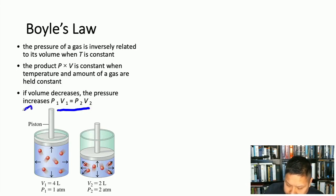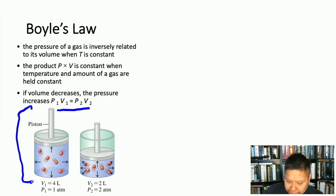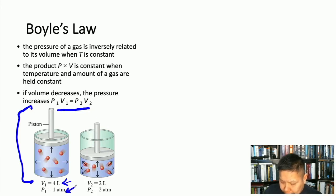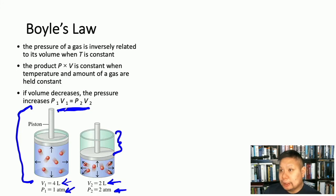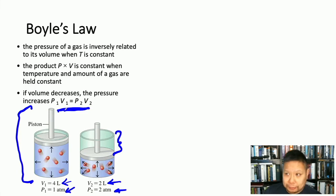Consider a piston in a cylinder where at the initial position the volume is 4 liters and the initial pressure is 1 atm. If we cut the volume in half to 2 liters, the pressure becomes 2 atm. That's where this formula comes from: if you have an initial pressure, initial volume, and a final volume, you can solve for the new pressure P2.